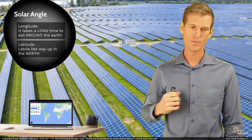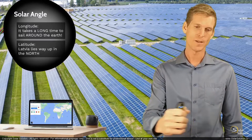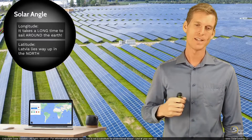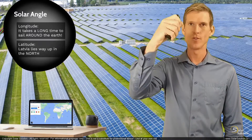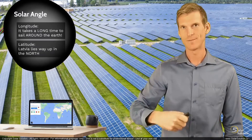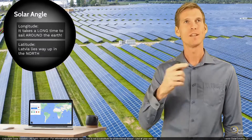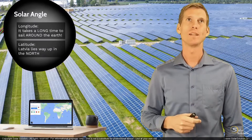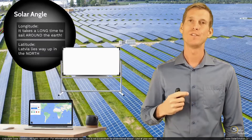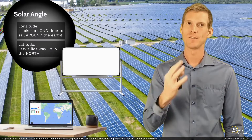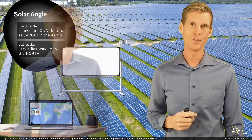So to recap: longitude is around the world — it takes a long time to sail around. Latitude is north to south. Let's go to the whiteboard and I'll give you a visual explanation of what I just said in words.